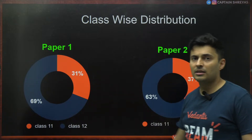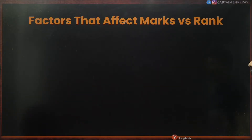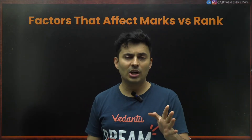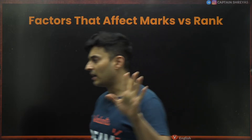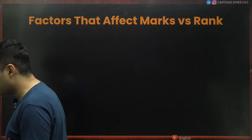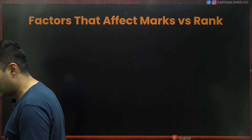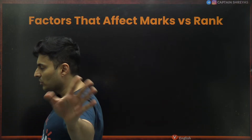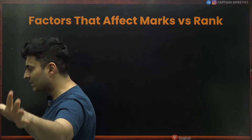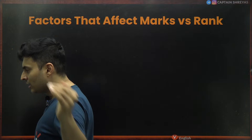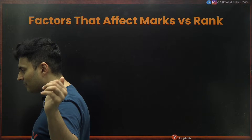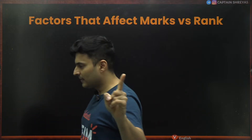Now for the cutoffs — what you all want to know. How many of you have calculated your approximate scores? I'm seeing ranges like 100, 120, 135, 170, 180, 200, 220, 240 in the chat. Scores of 240 would put you near the topper range. Let me show you last year's ranks versus marks, keeping in mind paper patterns have changed so direct comparison isn't perfectly valid.